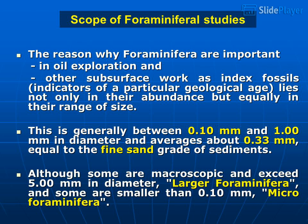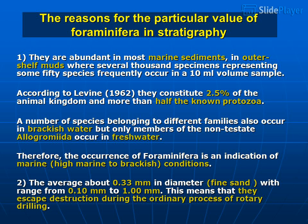Although some are macroscopic and exceed 5.00 mm in diameter (larger Foraminifera), and some are smaller than 0.10 mm (micro Foraminifera). The reasons for the particular value of Foraminifera in stratigraphy: 1. They are abundant in most marine sediments — in outer shelf muds, several thousand specimens representing some 50 species frequently occur in a 10 ml volume sample. According to Levine (1962), they constitute 2.5% of the animal kingdom and more than half the known protozoa. A number of species also occur in brackish water, but only members of the non-testate Allogromiida occur in freshwater. Therefore, the occurrence of Foraminifera is an indication of marine conditions.